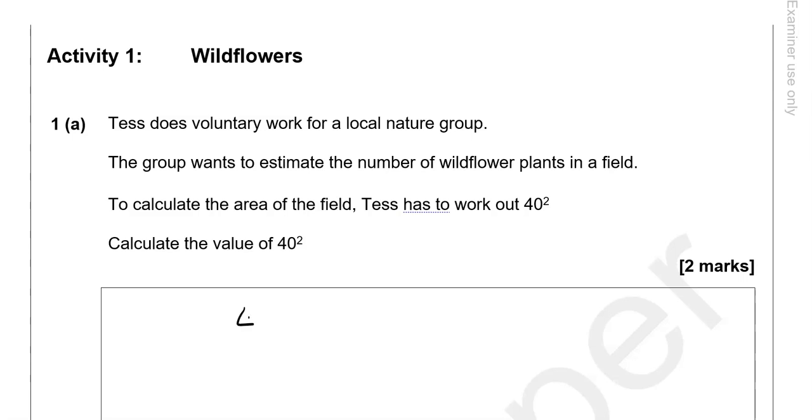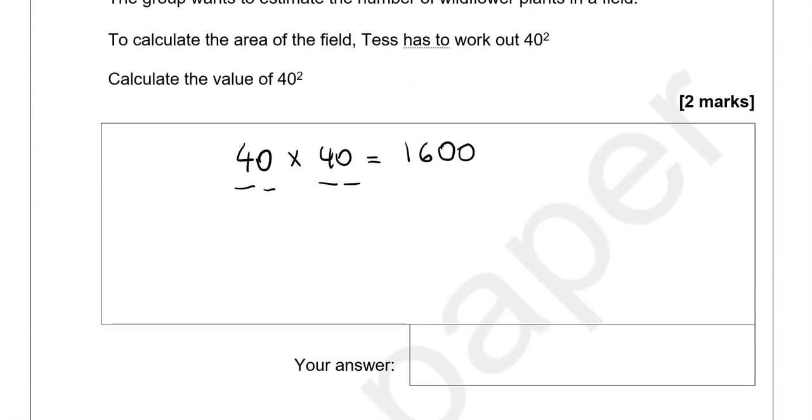40 squared is 40 times 40 and we can easily do this by multiplying 4 by 4 which gives us 16 and then adding the two zeros. So 1600. You can use other methods as well.